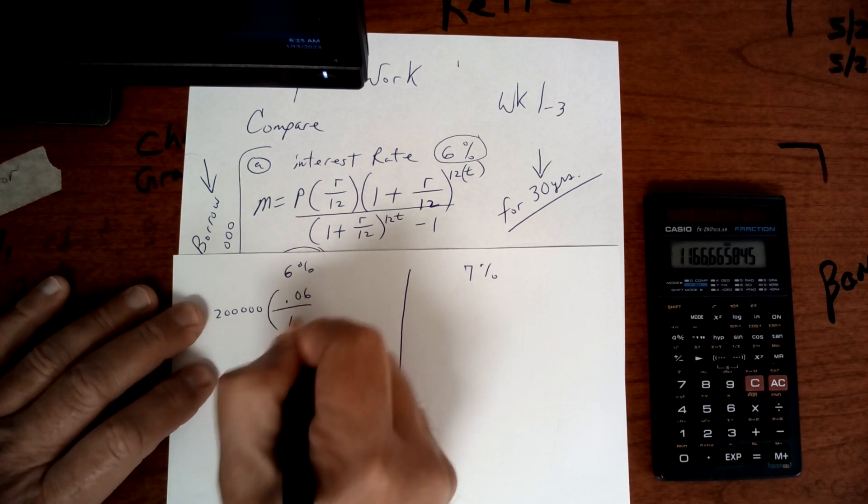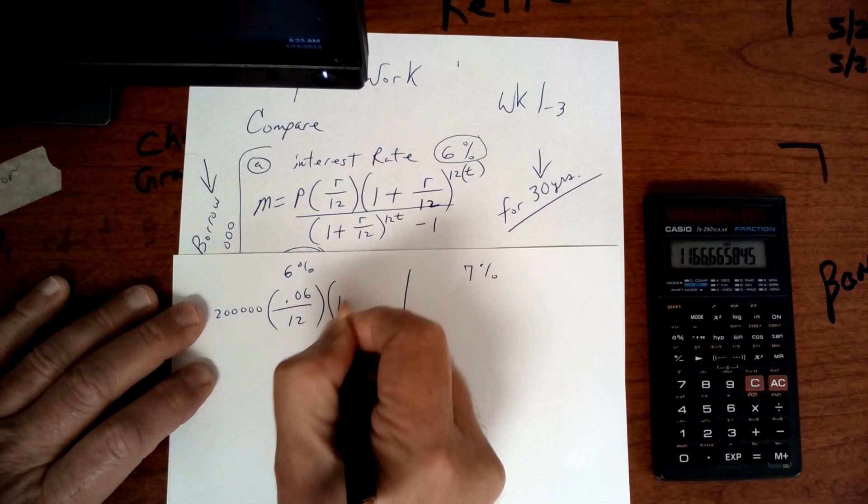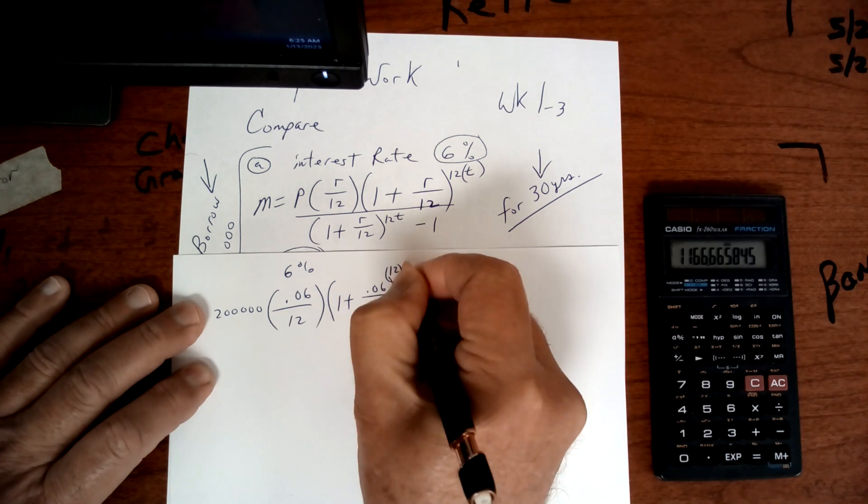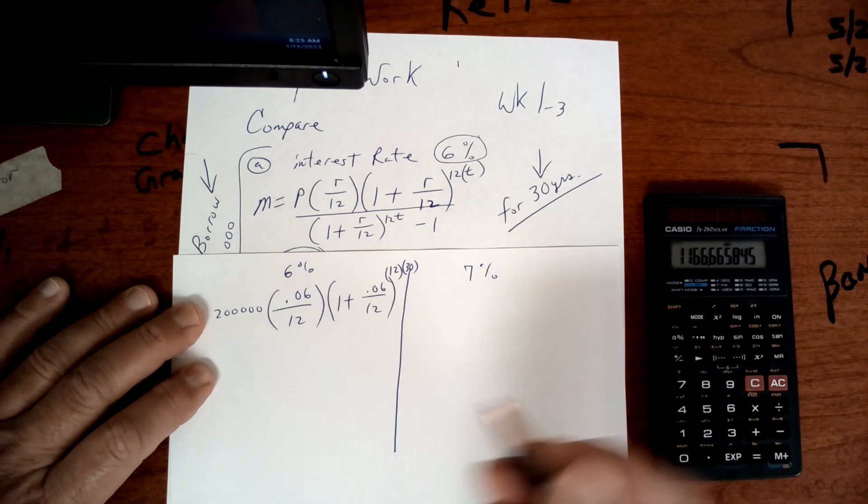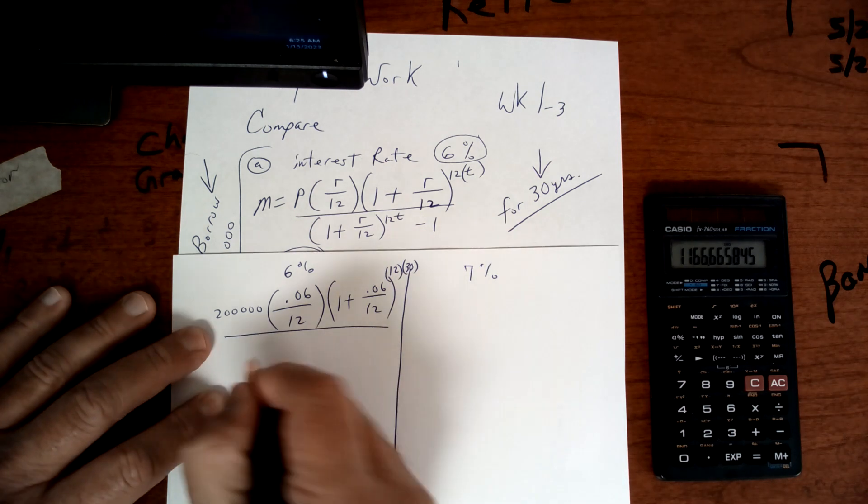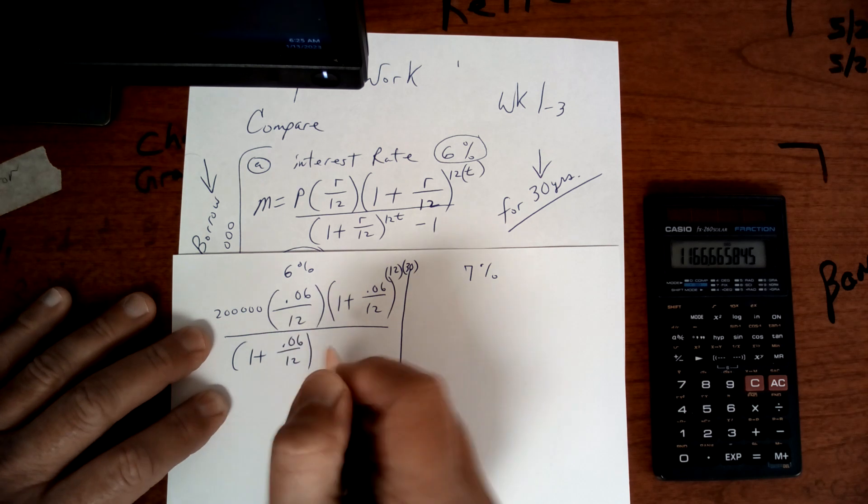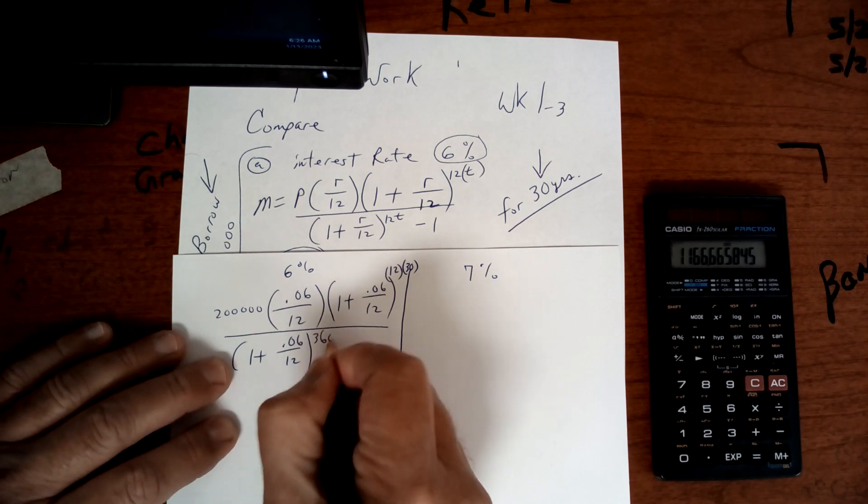12, and then 1 plus .06 divided by 12, and then 12 times 30, 30 years, divided by 1 plus .06 divided by 12. So this is going to be 360 minus 1.